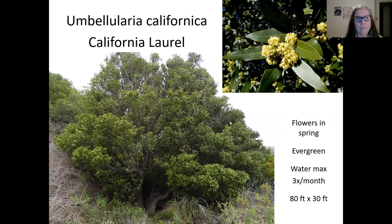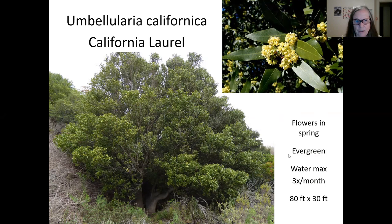The California laurel is also known as the bay laurel because its leaves are used in cooking, though it has a very distinct, different flavor from the standard bay leaf you get at the store. It flowers in the spring and is evergreen. It'll take water up to three times a month and is also grown along rivers and streams — it likes a nice deep watering. It can get up to 80 feet tall and 30 feet wide.